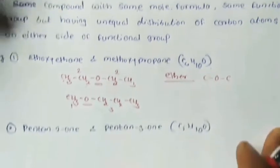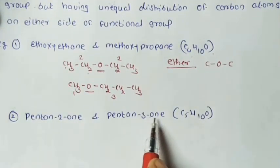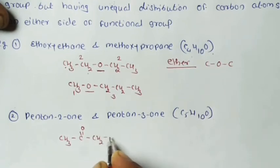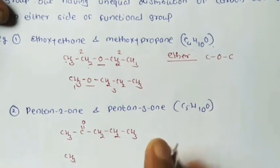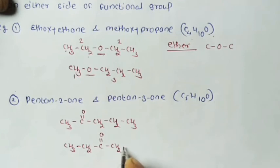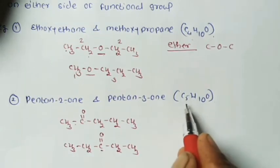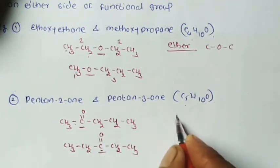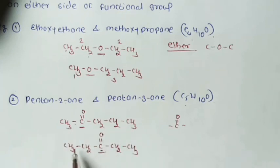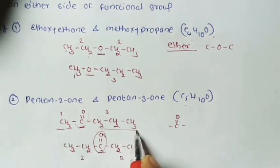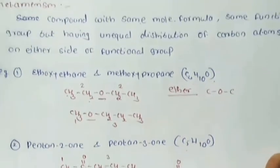A second example of metamerism: pentan-2-one and pentan-3-one, both with molecular formula C5H10O. First: CH3-CO-CH2-CH2-CH3 (pentan-2-one) — here the CO group has 1 carbon on one side and 3 carbons on the other. Second: CH3-CH2-CO-CH2-CH3 (pentan-3-one) — here CO has 2 carbons on each side. This unequal distribution of carbon atoms on either side of the functional group is called metamerism.